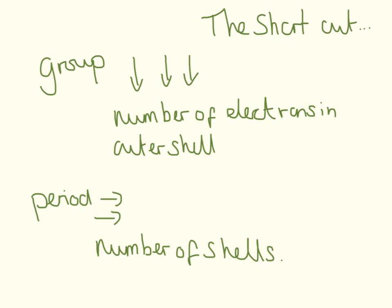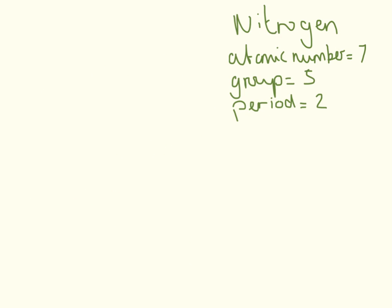That was the long way of doing it. I'm now going to show you a shortcut. When you look at your periodic table, you'll see there are groups that go down and periods that go across. The group something is in tells you the number of electrons in the outer shell, and the period tells you the number of shells that something has.